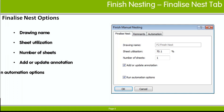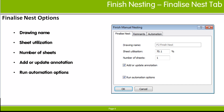The Run Automation Options will run whatever automation options are selected in the Automation tab. Incidentally, if you're still using the standalone multi-part nester dialog, an additional option is available in this tab to update part counts in the nest schedule. This option is obsolete with nest projects.